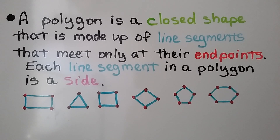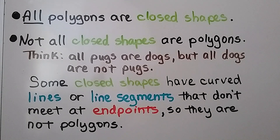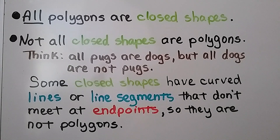All polygons are closed shapes, but be careful — not all closed shapes are polygons. Think of it this way: all pugs are dogs, but not all dogs are pugs. So all polygons are closed shapes, but there are some closed shapes that are not polygons. Some closed shapes have curved lines or line segments that don't meet at endpoints.